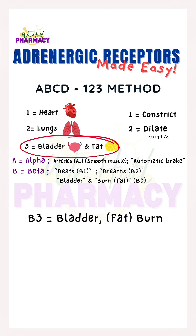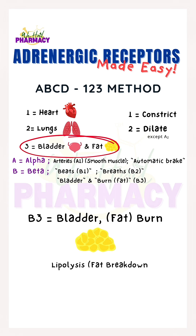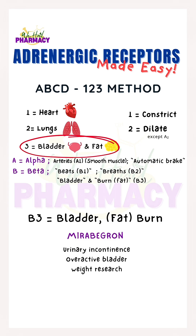Beta-3 — we think bladder and burn. Beta-3 relaxes the bladder, helping with overactive bladder issues, and it also promotes fat breakdown, which we call lipolysis. For example, mirabegron is a beta-3 agonist used for urinary incontinence. It helps calm an overactive bladder.